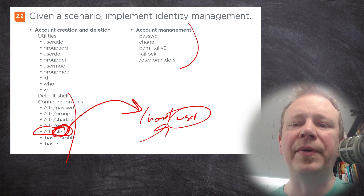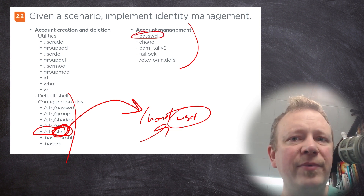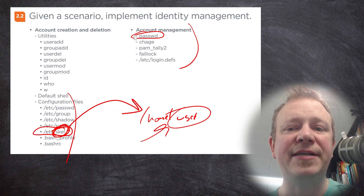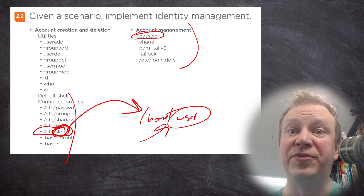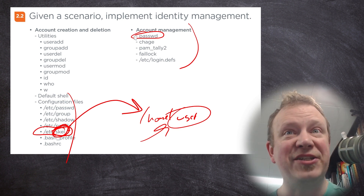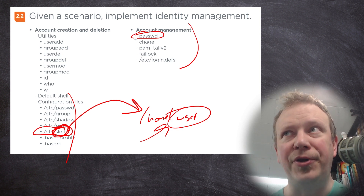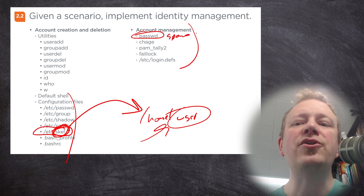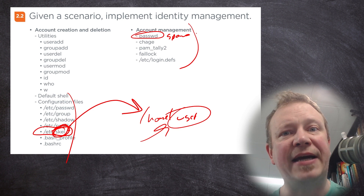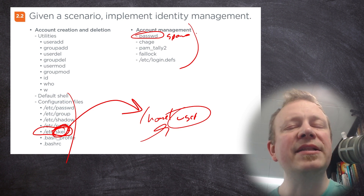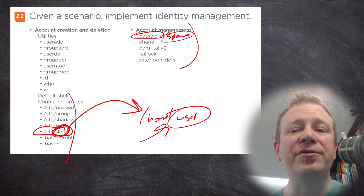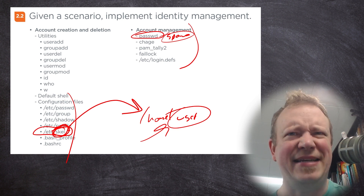The passwd command is something we've used before. A non-root user types passwd and gets prompted for their old password and then the new password twice. If you're root and type sudo passwd followed by a username — like spowers — you can change that user's password without being prompted for the old one. Only root can put a username after passwd to change someone else's password.